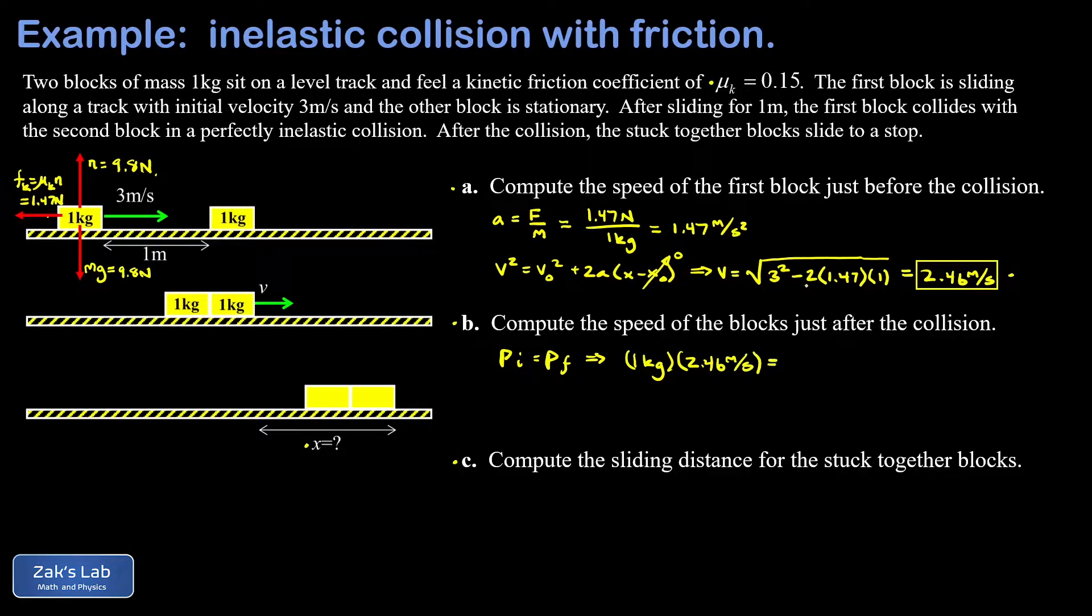My final momentum, now I have two blocks stuck together, both moving for a total of two kilograms. And I have an unknown final velocity. So to solve for VF, well, the kilograms cancel there, and we're just dividing both sides by two. And we get that the final velocity that's just after the impact occurs is 1.23 meters per second.